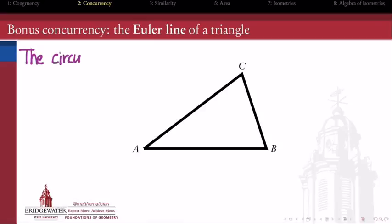So this concurrency begins with us taking the first of our triangle concurrences, the circumcenter, call it O. Remember the circumcenter is the concurrency of a triangle's three perpendicular bisectors of its sides. So start with that point.